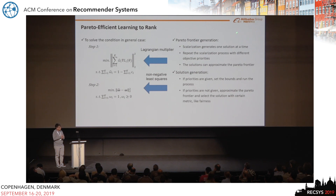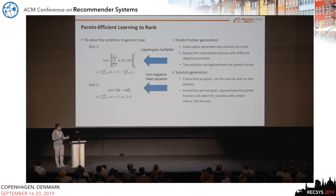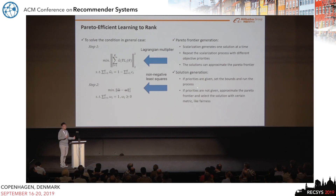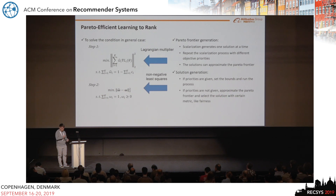For Pareto frontier generation, we repeat the scalarization process by setting different boundary constraints. Once the Pareto frontier has been generated, we select the solution in two cases. If priorities are given, we just set the constraint. If priorities are not given, we can first approximate the frontier and select the solution with a predefined metric, such as fairness.